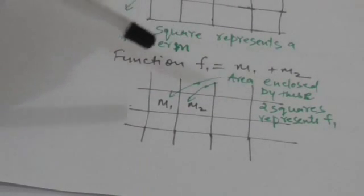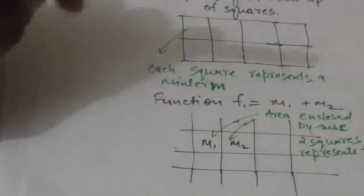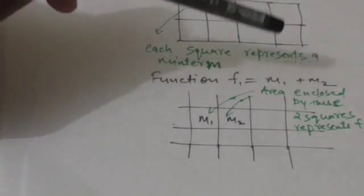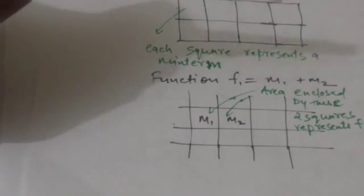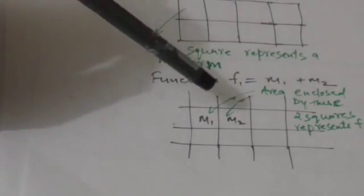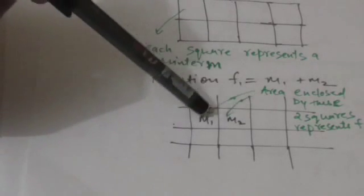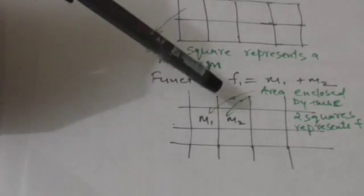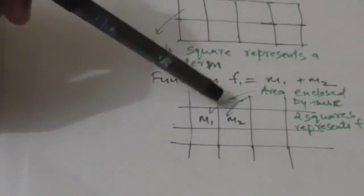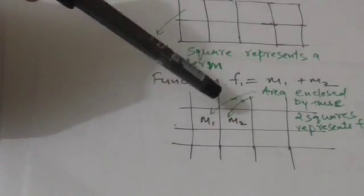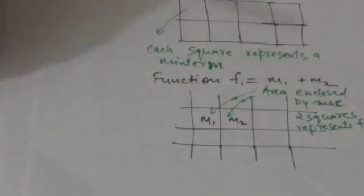In a K-map, the function will be represented by the area enclosed by those squares whose min terms are included in the function. For example, suppose there is a function f1 which is the sum of two min terms m1 and m2, so f1 = m1 + m2. The area enclosed by the two squares representing m1 and m2 represents the function f1.